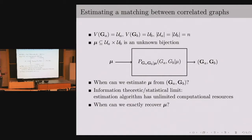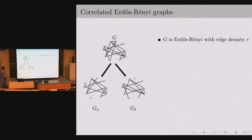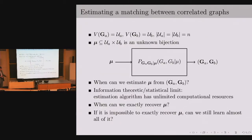I'll ask questions about the information-theoretic or statistical limit, placing no restriction on the amount of computational resources our algorithm may use — a conservative assumption from a privacy point of view, assuming the adversary has access to large resources. The two questions are: when can we exactly recover the matching mu, and when that's impossible, when can we still learn almost everything about mu?